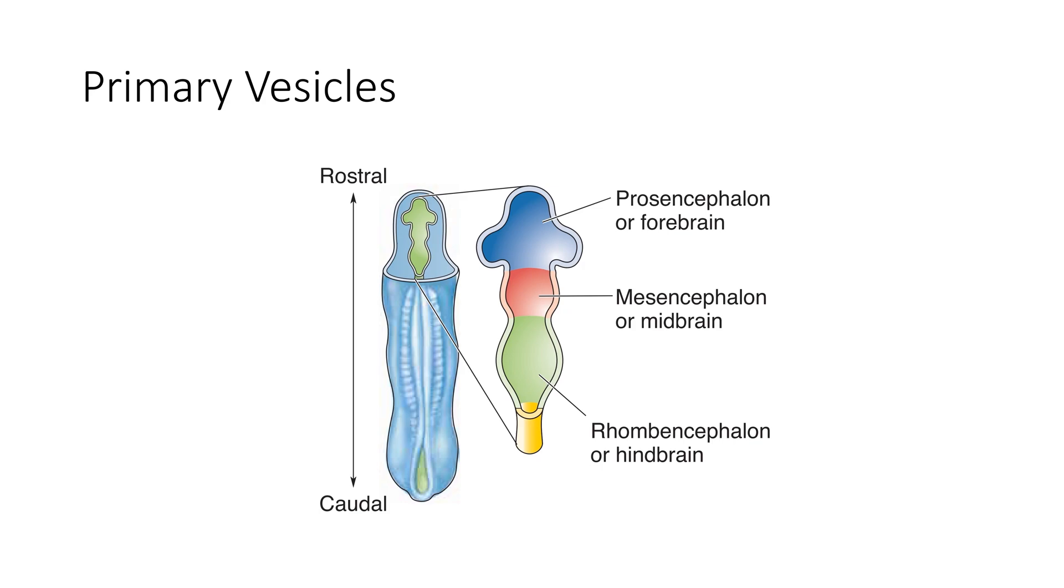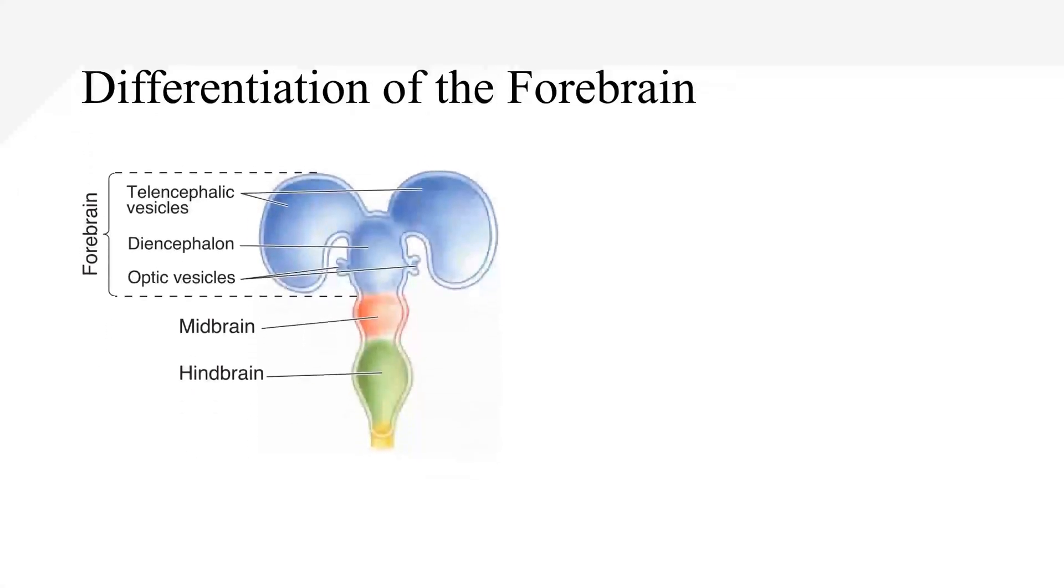After the neural tube is formed with its primary vesicles, it's time for it to develop and become more complex and modify itself. Each vesicle differentiates in its own way and we have three different forms of differentiation here. Let's start with differentiation of the forebrain. The forebrain differentiates to the secondary brain vesicle in the forebrain. The central structure that remains after the secondary vesicles have sprouted off is called the diencephalon or between brain.